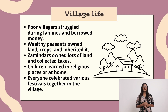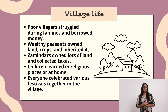Village Life: Poor villagers struggled during famines and borrowed money. Wealthy peasants owned land and crops and inherited them. Zamindars owned lots of land and collected taxes. Children learned in religious places or at home. Everyone celebrated various festivals together in the village.